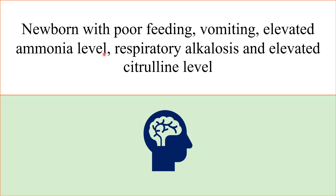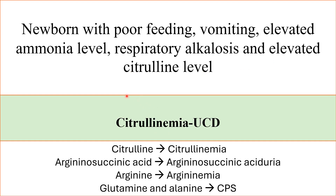A newborn with poor feeding, vomiting, elevated ammonia level, respiratory alkalosis, and elevated citrulline level. This is a case of urea cycle disorder. Key words: symptoms such as poor feeding, vomiting, even coma; elevated ammonia level — very high; normal anion gap or respiratory alkalosis. In plasma amino acids, we have elevated citrulline level, so this is citrullinemia, a subtype of urea cycle disorder.